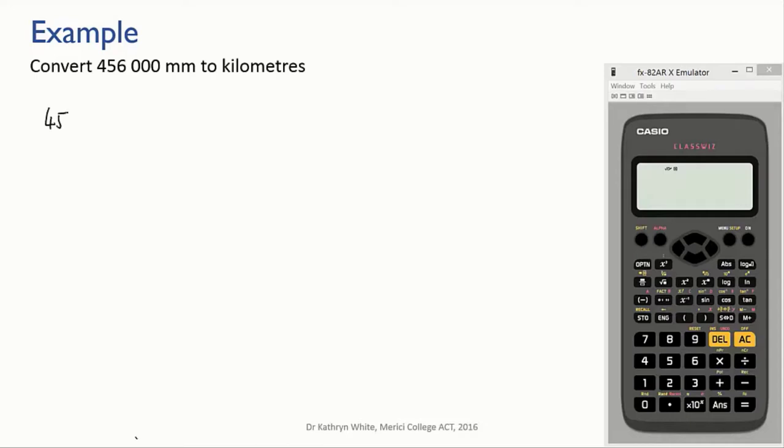First, put our known quantity over one to make it a fraction. Now, I don't know the conversion factor that directly takes me from millimeters to kilometers off the top of my head, but that's okay because we can do this in two steps.